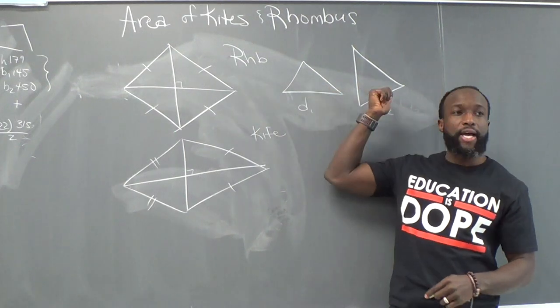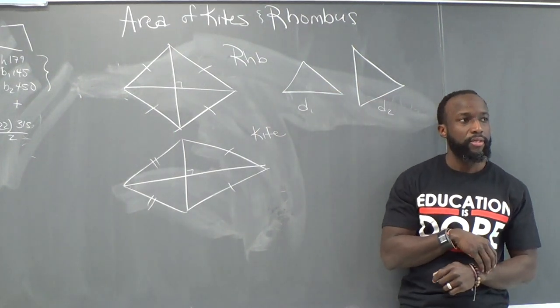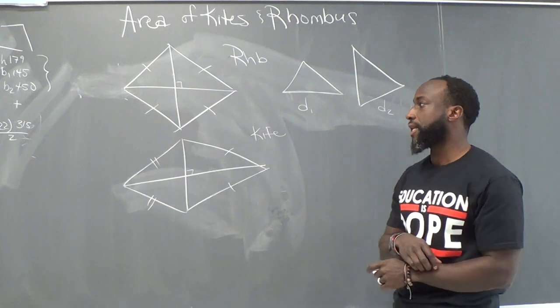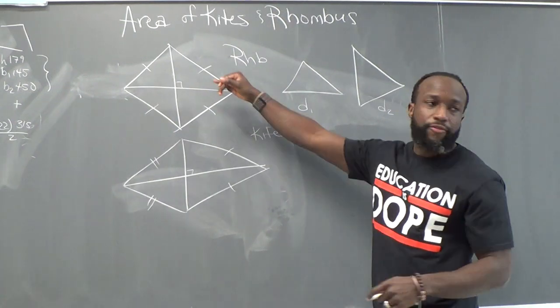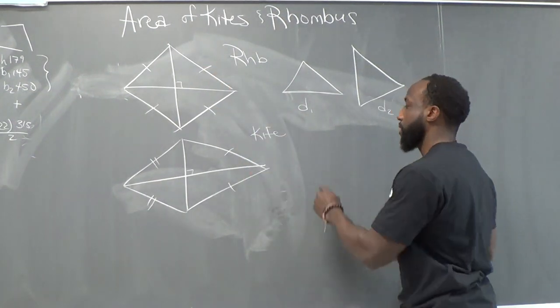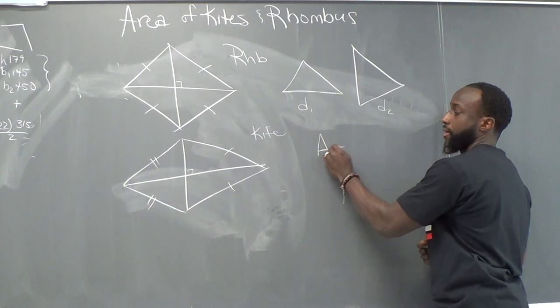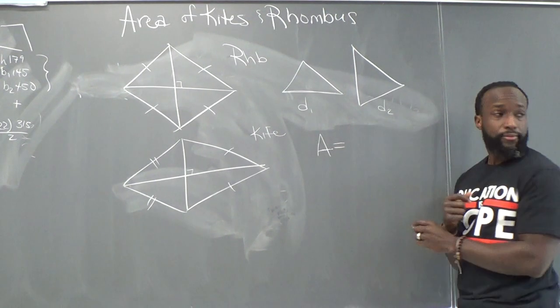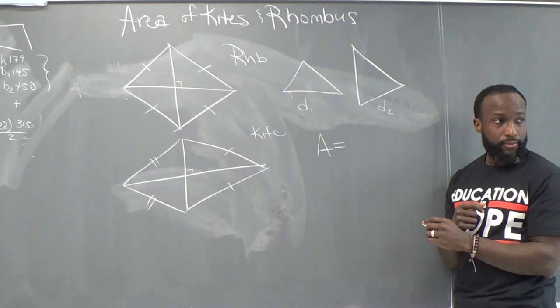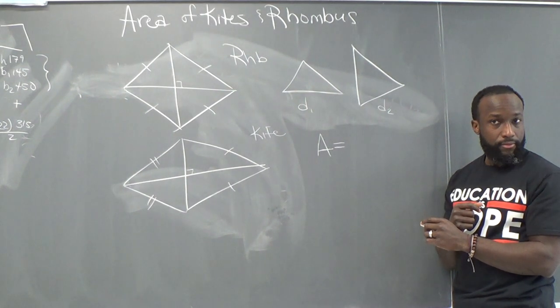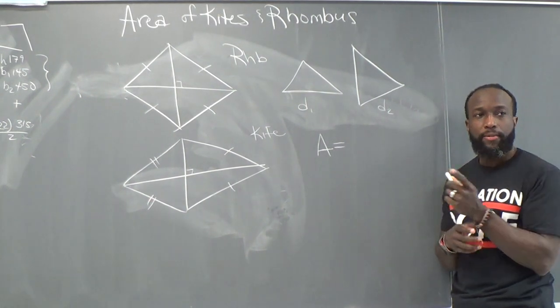And then what else do you see when we cut it in half? Triangles. Yeah. So with that being said, the formula for both a kite and a rhombus is going to be what, Kiara? Isn't it area equals base times height divided by 2 times 4? Would that be wrong? Not quite.